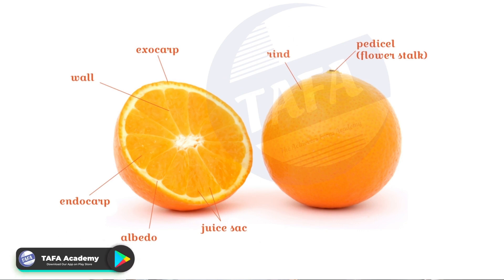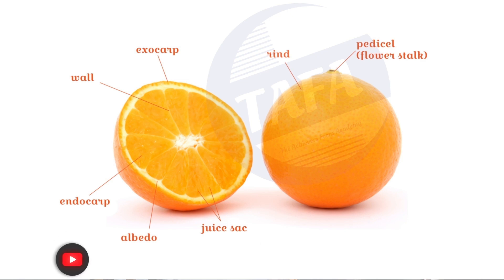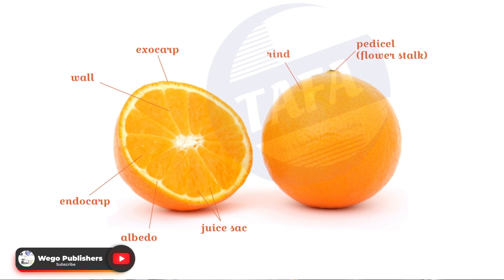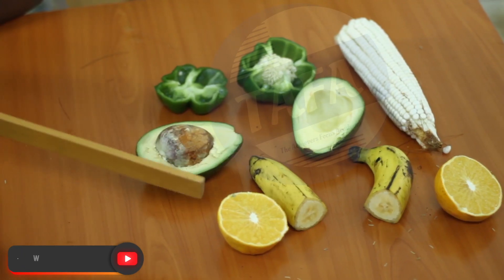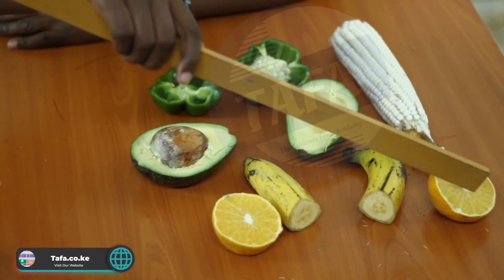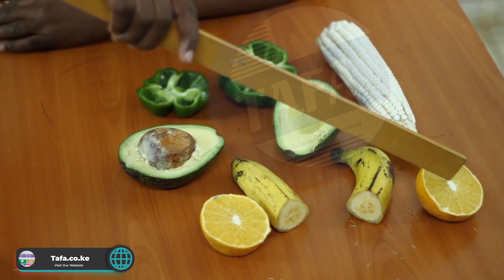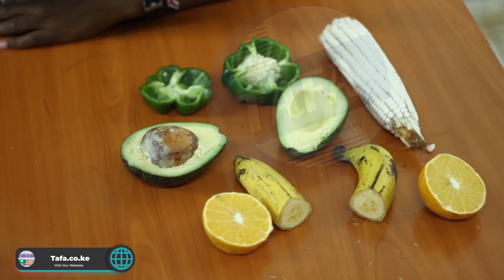The diagram illustrates the internal structures of an orange. A transverse section of an orange shows the exocarp, which is the outer part, then the mesocarp, which is the white part, followed by the endocarp, which is the juicy part. In some cases, seeds are found at the center.